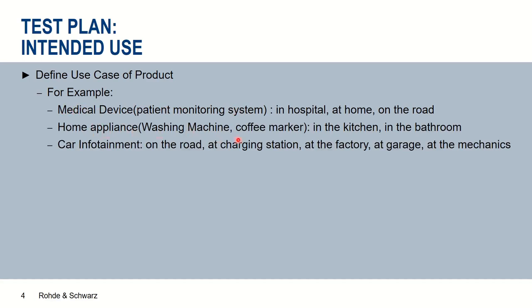For home appliances like washing machines and coffee makers placed in kitchens or bathrooms, they see a much more stable, time-invariant RF spectrum — not nearly as messy as a hospital environment. Cars and car infotainment systems encounter different scenarios and different RF spectra in real-world operation. The type of RF environment we observe needs to be reflected in our test approach and recreated in the lab.